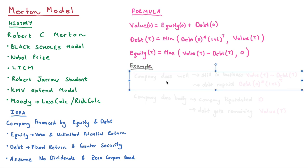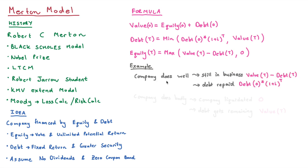Let's look at two situations. When the company does well and is still in business, equity equals the value of the company less the debt, and the debt is repaid equal to the original amount times the interest paid — that is, debt(0) times the interest rate, or future value minus future debt.